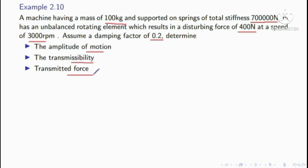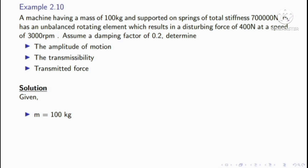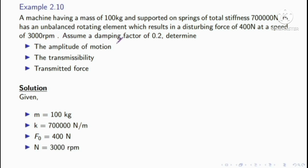Given data: mass m equal to 100 kilogram, stiffness k equal to 7 into 10 raised to 5 Newton per meter. The disturbing external force is equal to 400 N. Speed N is equal to 3000 RPM. Damping factor zeta is equal to 0.2.